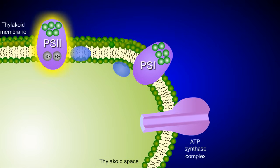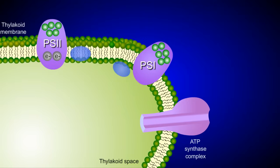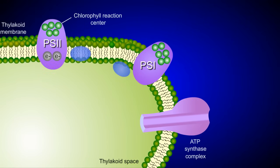Both photosystems are embedded in the thylakoid membrane. It's important to realize that these photosystems are named for the order in which they were discovered, not for the order in which they participate in the photosynthetic process. The light reactions actually begin in Photosystem 2.